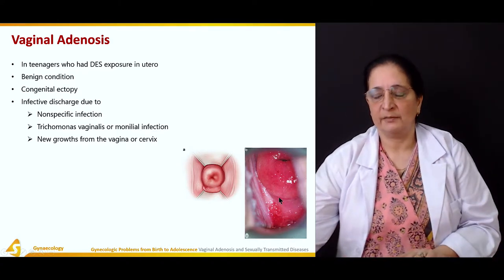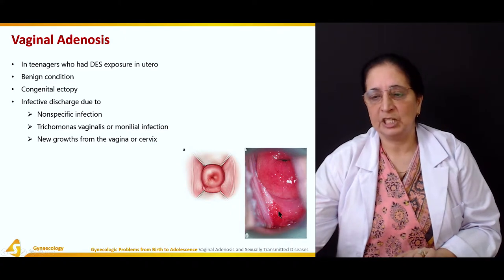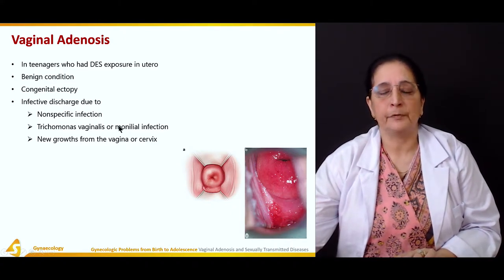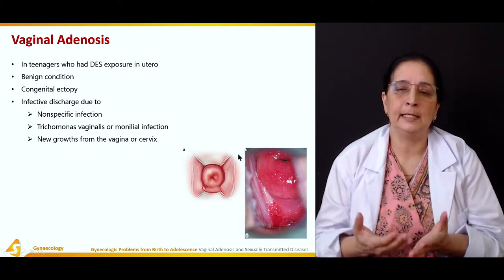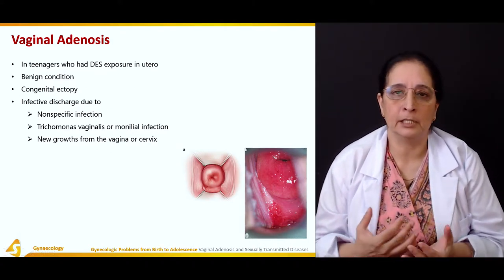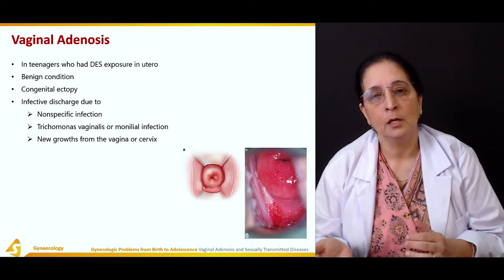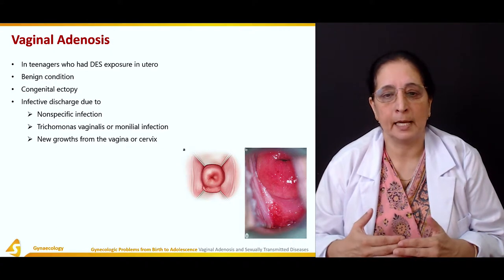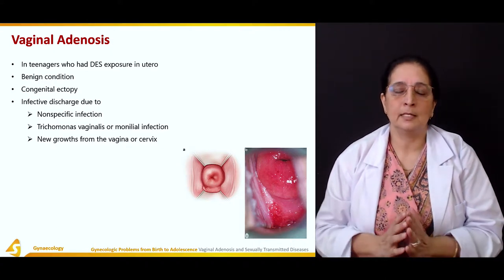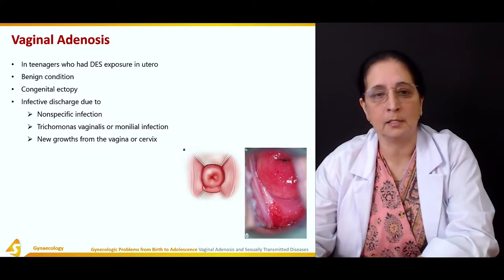You can see it's very reddish. There is congenital ectopy present. Ectopy is the presence of columnar epithelium instead of the normal squamous epithelium present at birth. There is also new growth from the vagina or cervix.